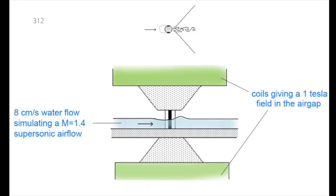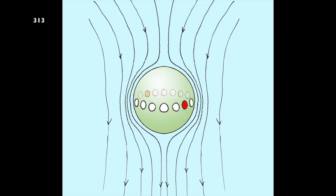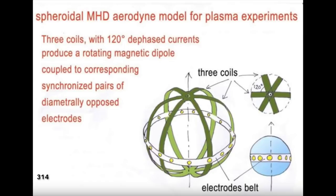The Lorentz force created a depression on the front part of the object, so that one could imagine an extension to an axially symmetrical MHD aerodyne of this two-dimensional schema. Inside, a system of three coils, fast-shifted, that produces a synchronized rotating magnetic dipole. If the period of such system is small with respect to the transit time of the fluid, it will work as an axi-symmetric force field.